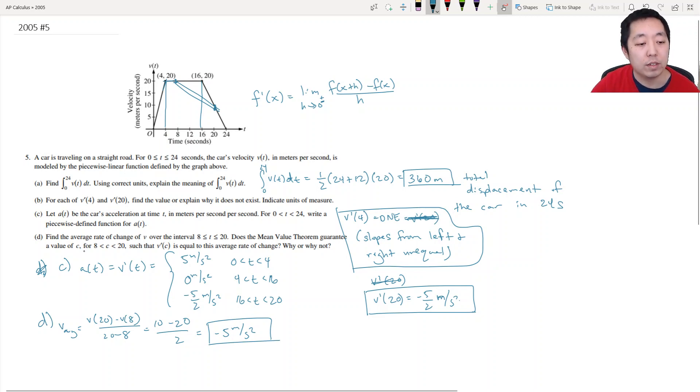Does the mean value theorem guarantee a value of c to where the tangent line slope is equal to the secant line slope? And no, because you see you can't find one because there's only two slopes: this slope and this slope. And it's because f is not differentiable at t equals 16. It has to be differentiable over the whole interval. Because it's not differentiable at that particular point, that's why you can't apply the mean value theorem.